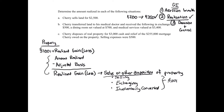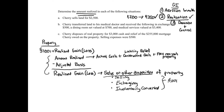This problem asks us to determine the amount realized in the following situations. We have three different transactions. Before we go through them, I'm going to give you the technical formula for amount realized. Amount realized equals actual cash received, plus constructive cash — also known as liability relief — plus the fair market value of non-cash property received, minus selling expenses.